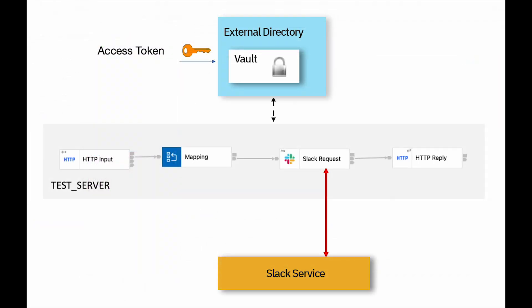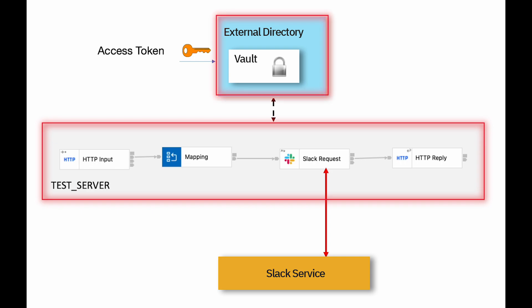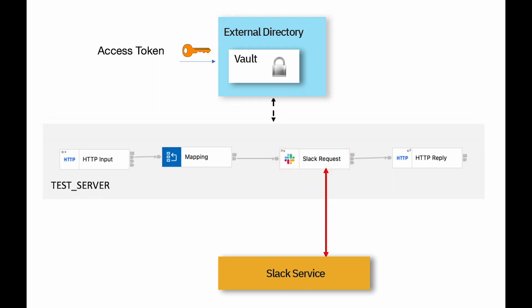So in this video, I've shown that you can now configure the local integration server to use an external directory vault or a private vault. I've shown that it is now easier to configure the discovery connector node, such as the Slack request node, when using the external directory vault. Previously, when using a discovery connector node with a private integration server vault, you'd need to have stopped the integration server. But now, when using the external directory vault, the integration server does not need to be stopped — it can be running and the node can be used. Thank you.